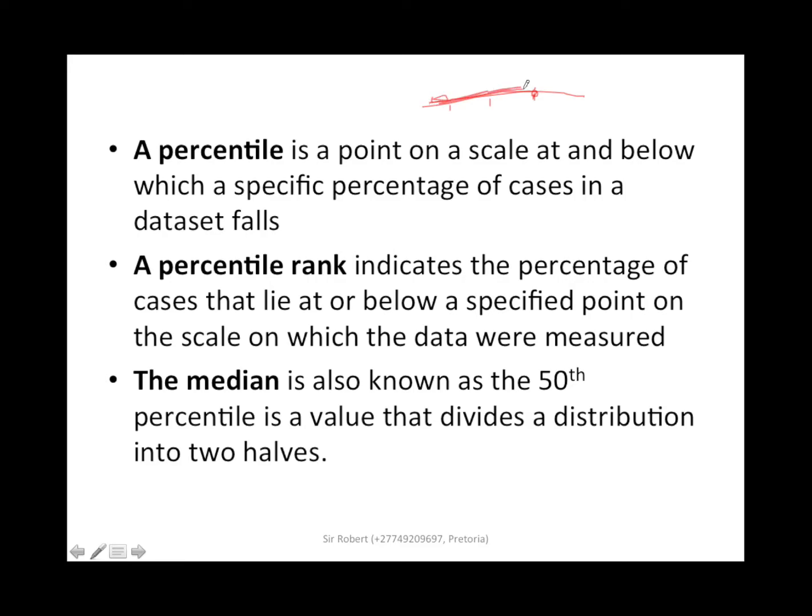This will become clear as we solve a question. A percentile rank indicates the percentage of cases that lie at or below a specific point on the scale on which the data were measured. The median is also known as the 50th percentile, a value that divides a distribution into two halves. So a median divides the data into two equal parts, like 50 percent on the right, 50 percent on the left.